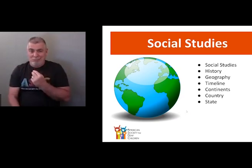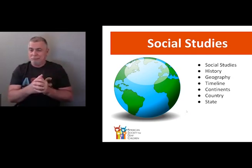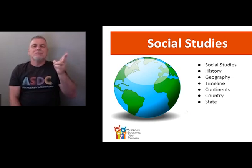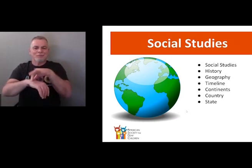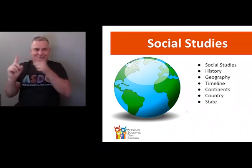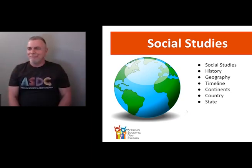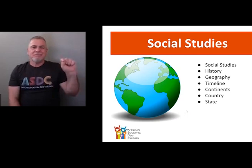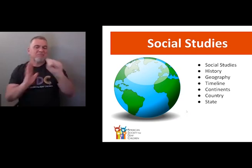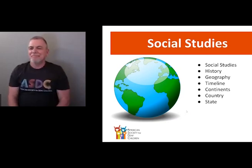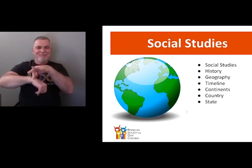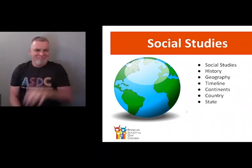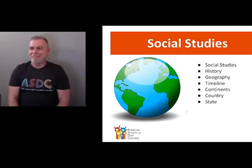Let's review: social studies — two S's. History. Geography. Timeline. Country, or continent, but typically country. You can spell state or use the S handshape. Notice on the slide the picture of the globe — the green earth and the blue water, land and water. That's earth.